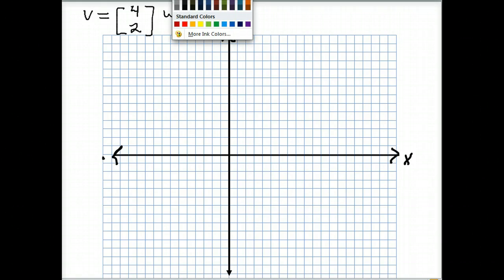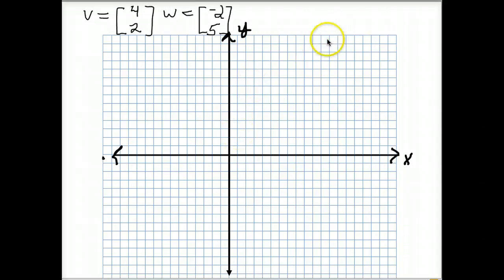Now, in two dimensions, graphing the vectors can be seen as the x, y coordinates. The 4, or the first value, is the x coordinate, and the 2 is the second. So we could graph vector v as positive 4, positive 2.